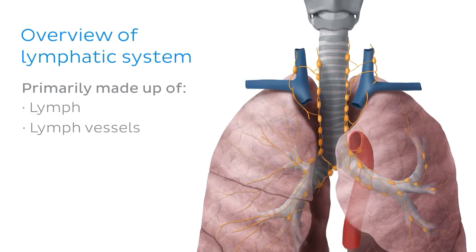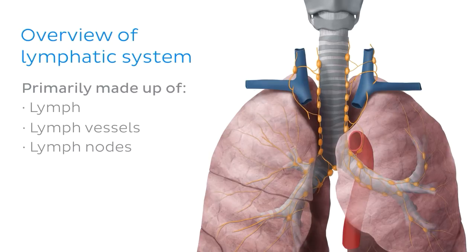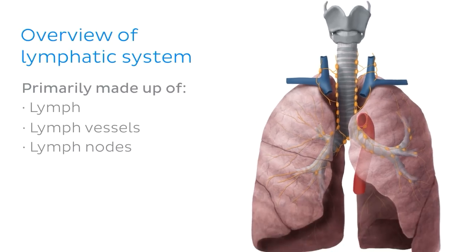The third element we find in the lymphatic system is what we know as the lymph nodes. Lymph nodes are a bean-shaped organ seen here on this image. They are found throughout the lymph vessels and contain large numbers of B cells and T cells. The lymph nodes are responsible for filtering lymph fluid and removing infectious agents. Now let's focus on lymph.